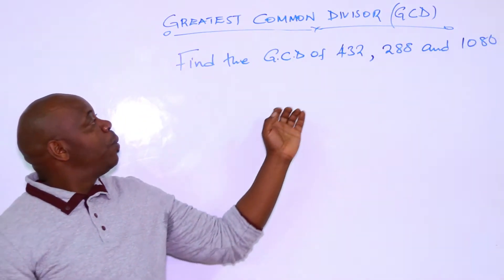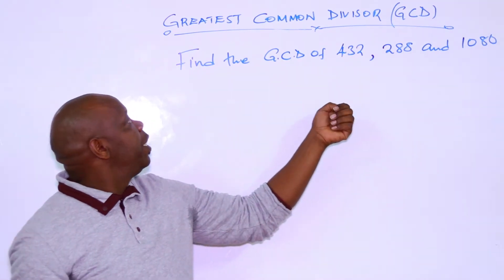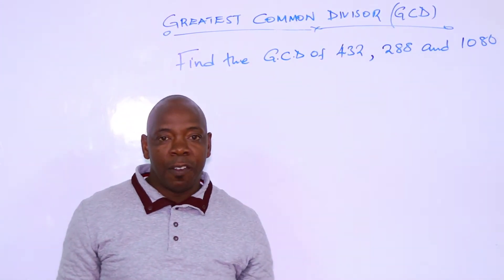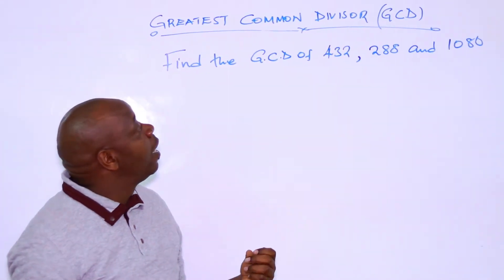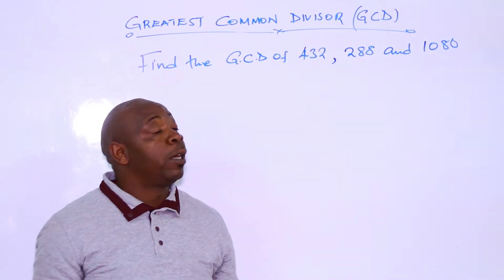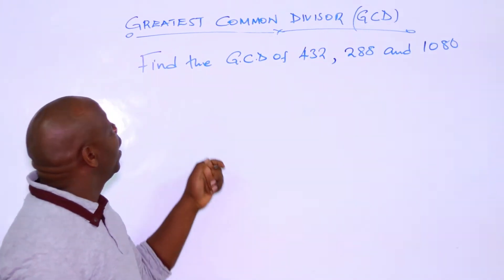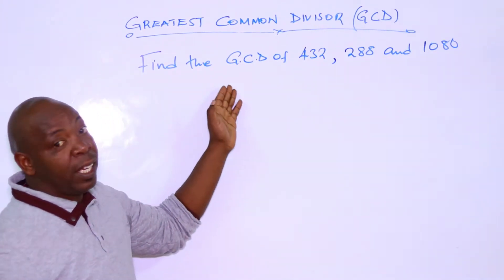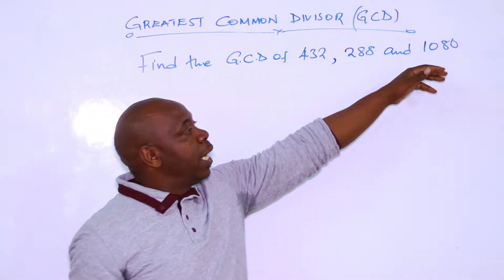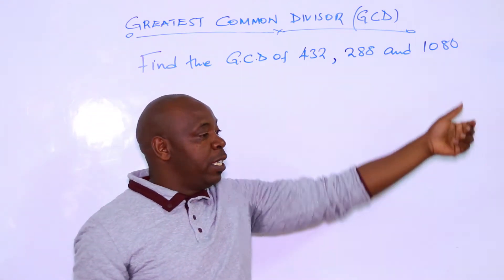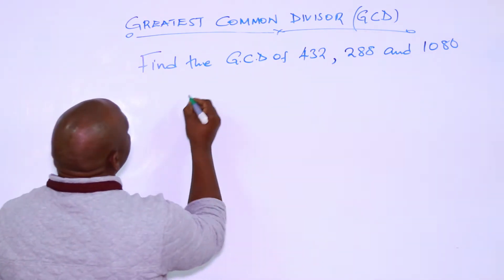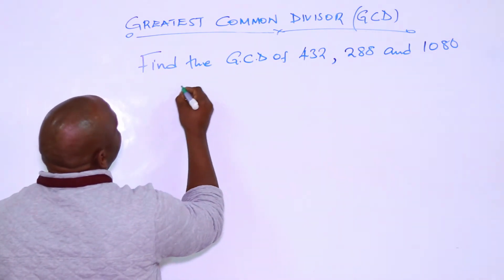So there are two methods of getting the GCD. The first one is the table method, and number two is the factor method. Now we find the GCD of 432, 288, and 1080 using the table method.